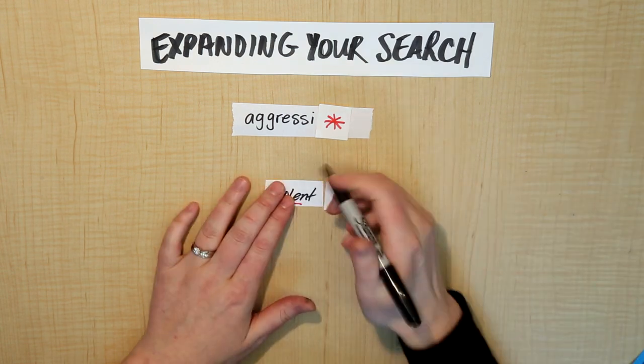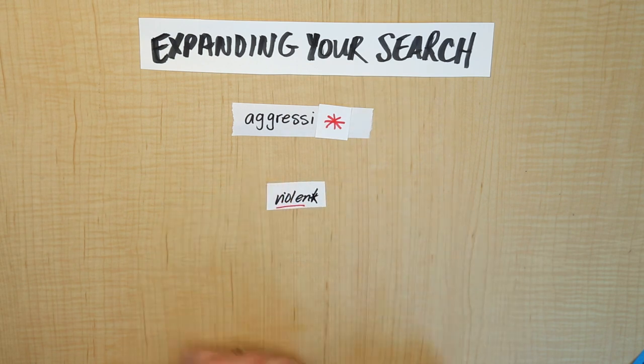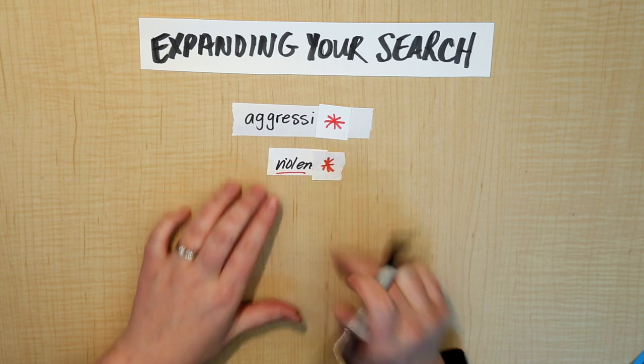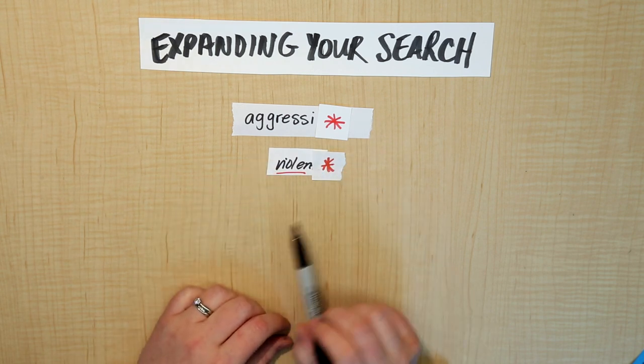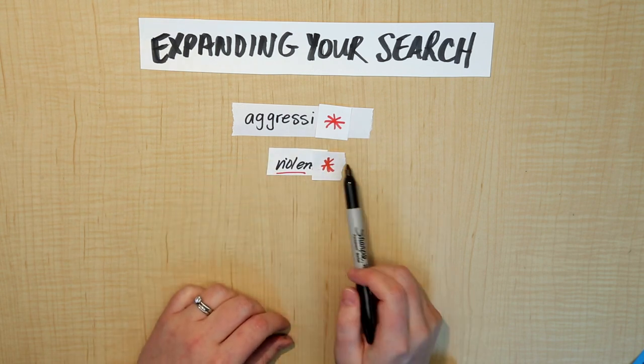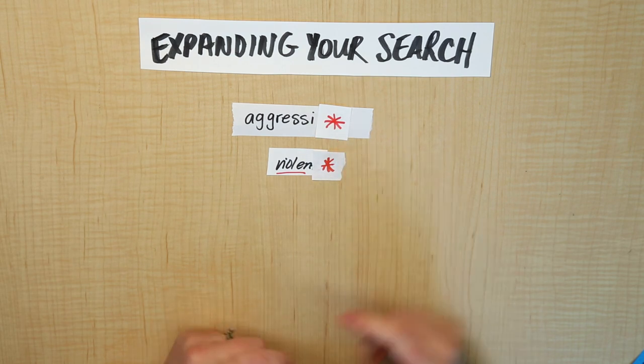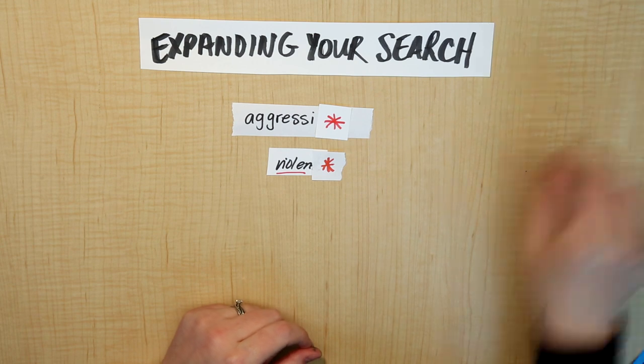However, if you took away the T, so it would be violen star, then you're going to get violent or violence. You have to remove as many letters as you need to get to the root, then put the star and it gives you more options.